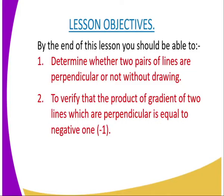On to the lesson's objectives. By the end of this lesson, you should be able to: number one, determine whether two pairs of lines are perpendicular or not without drawing — you are not supposed to draw a Cartesian plane. Number two, you are supposed to verify that the product of gradients of two lines which are perpendicular must be equal to negative one.